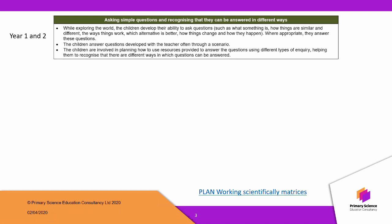In terms of where this fits in with the national curriculum, in Year 1 and Year 2, in the working scientifically section, there's a statement — as you can see in the green here — about asking simple questions and recognizing that they can be answered in different ways. It doesn't explicitly state what those different ways are, but throughout the national curriculum there are five types of inquiry mentioned, and I believe that 'answered in different ways' refers to those different types of inquiry.